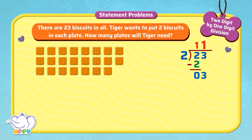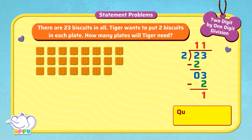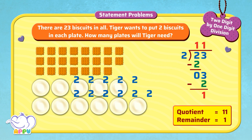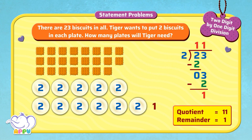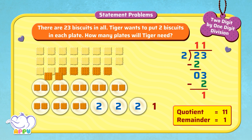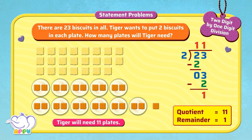2 times 1 equals 2. We subtract 2 from 3 to get 1. 11 is the quotient and 1 is the remainder. So Tiger will need 11 plates. Good work!